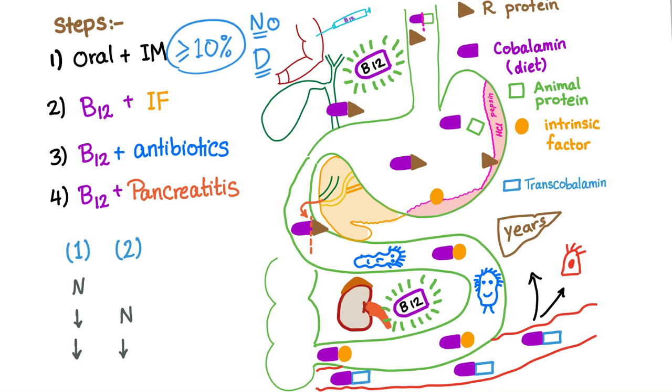If it's less than 10%, oh, there is a problem. Let's go to step number two. I will give them the B12 plus the intrinsic factor. What if the result in the urine normalizes and it's now more than 10%? So it increased. First step it was less than 10%, second step it's increasing. This means I'm fixing the issue. What's the issue? Intrinsic factor deficiency, i.e., pernicious anemia.